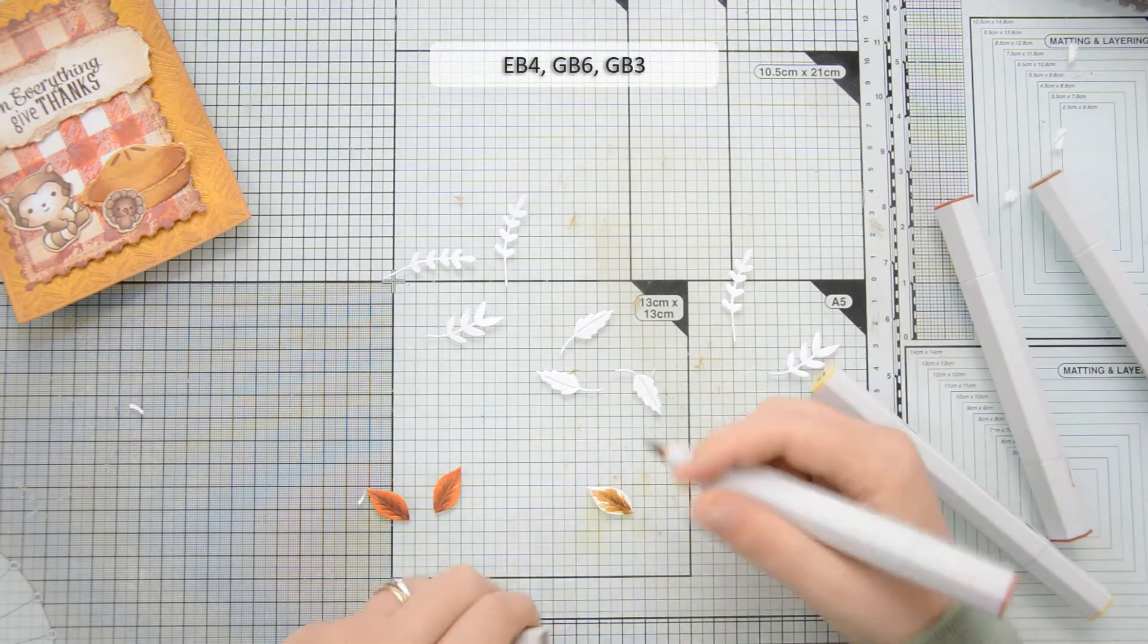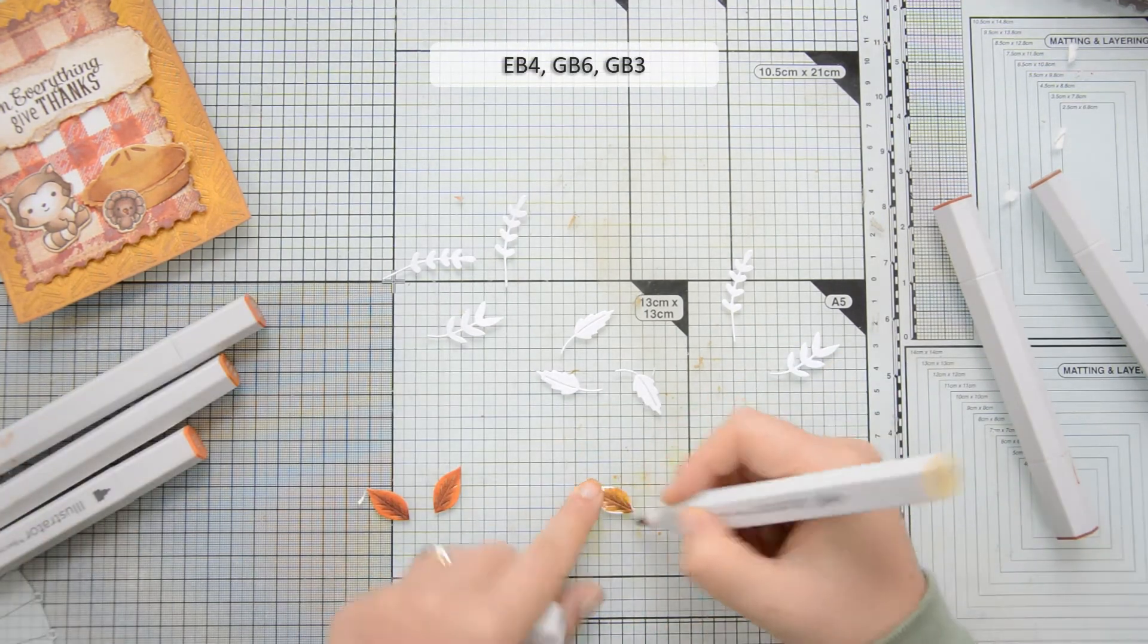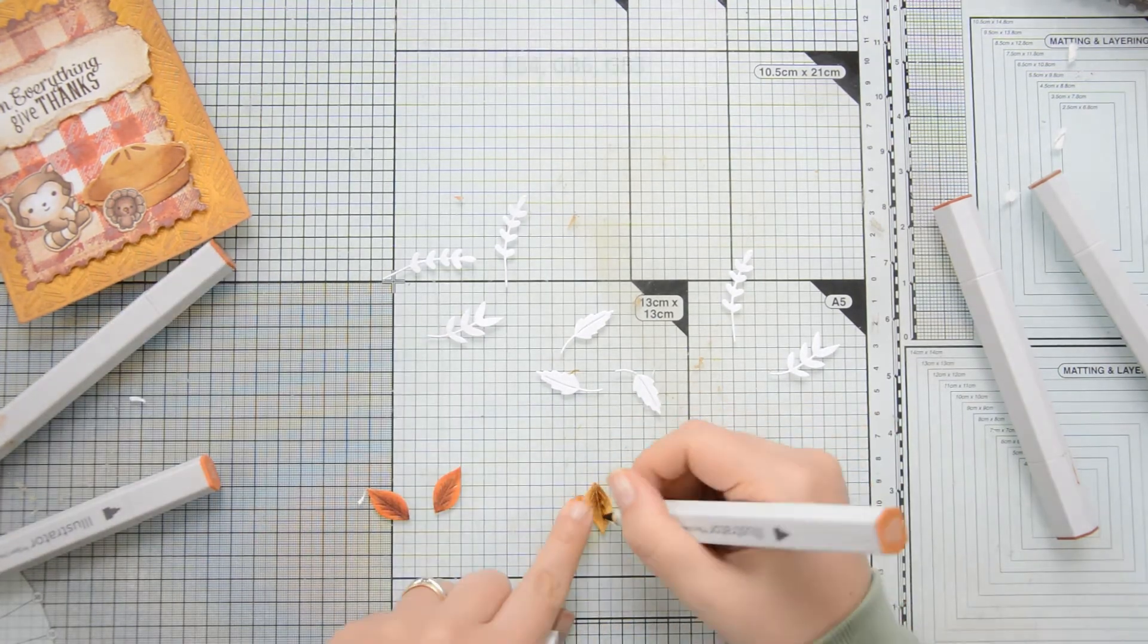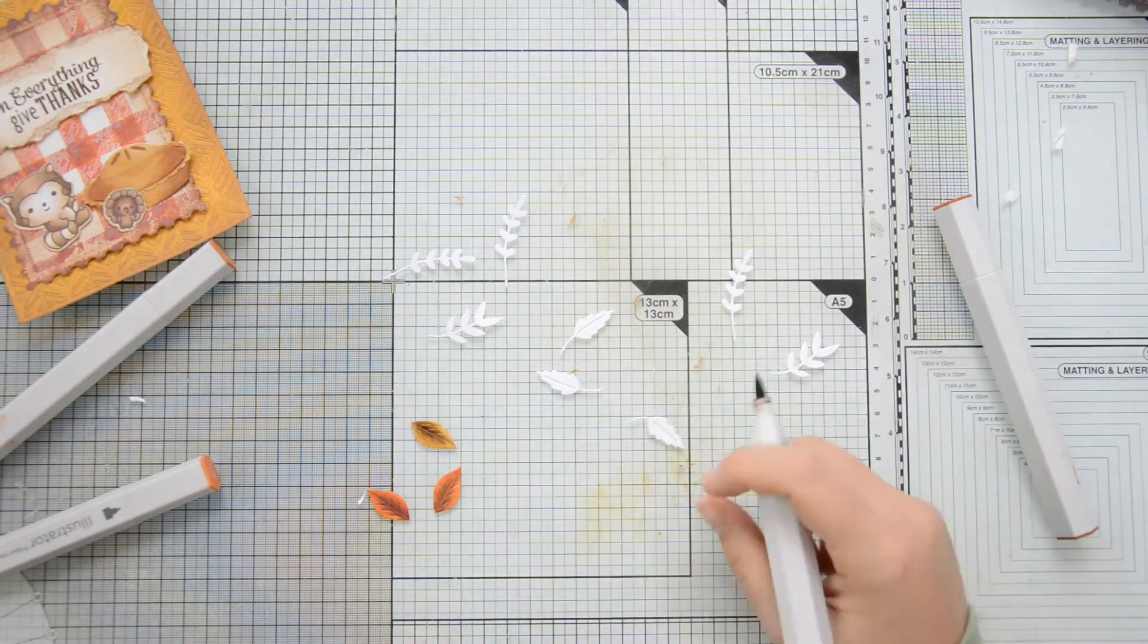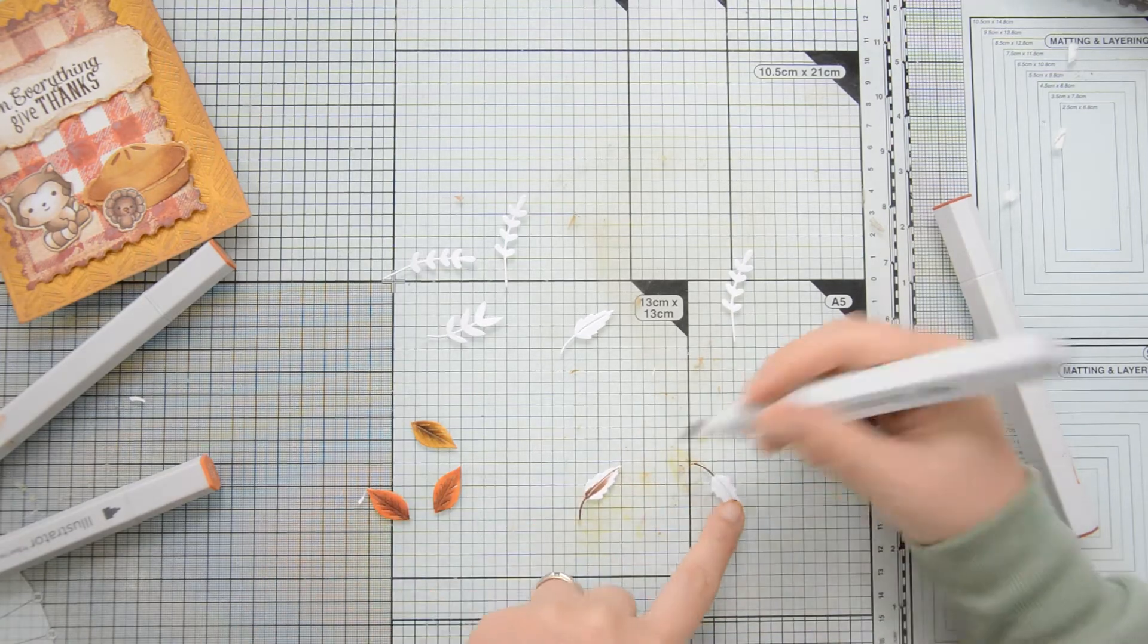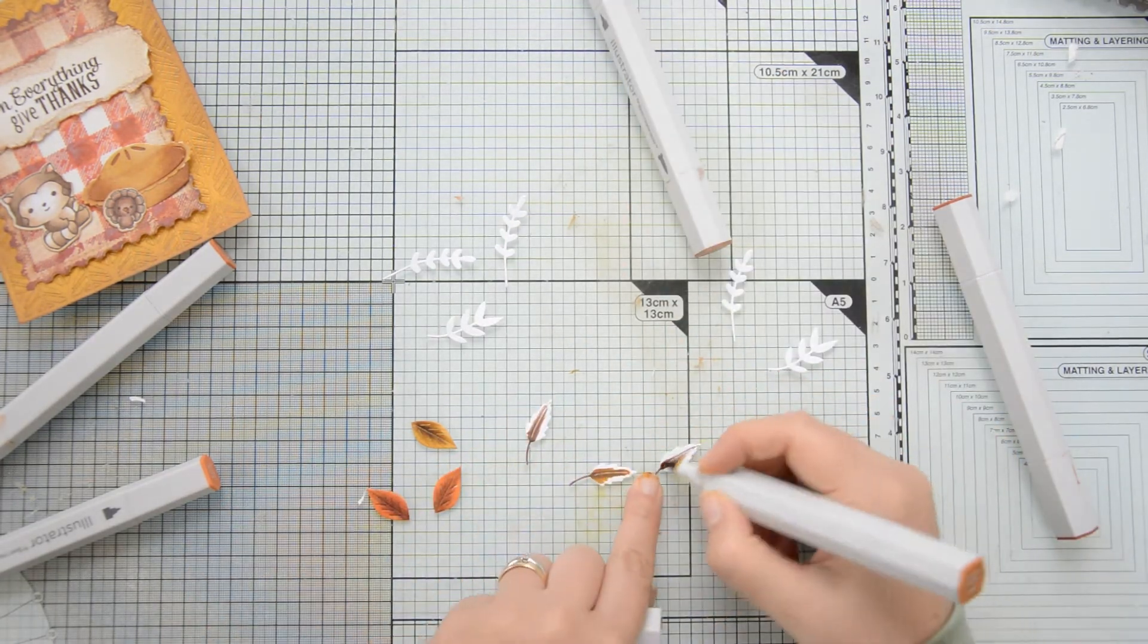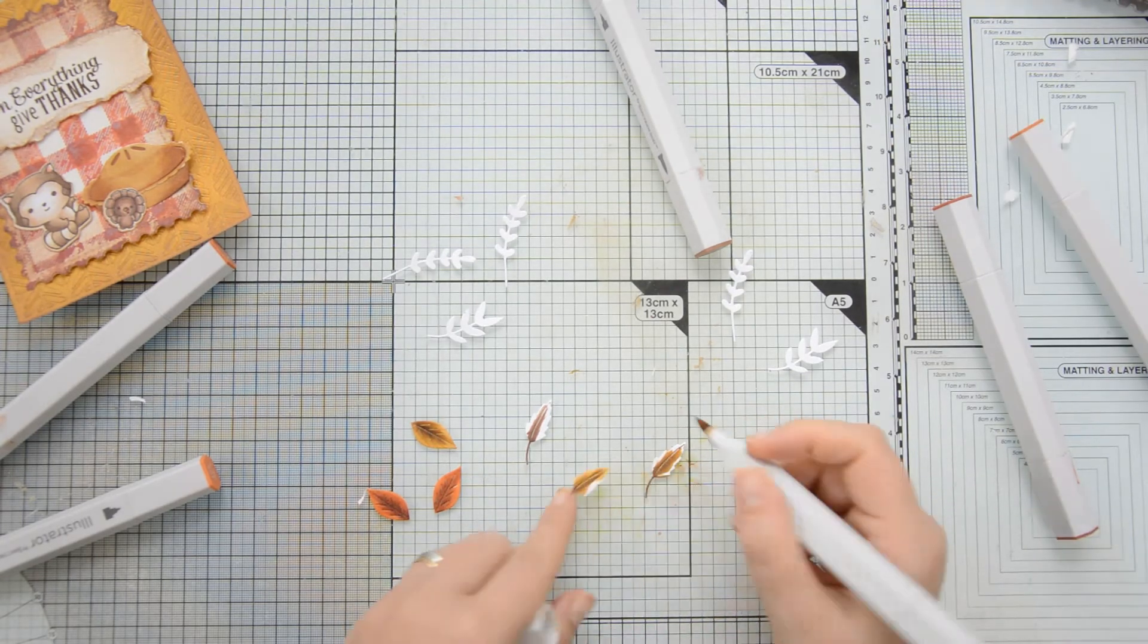The next elements that I created to decorate my card front are these leaves and for those I used the floral pocket tag die by Sugar Pea Designs. I die cut some Neenah Solar White 110 pounds cardstock and then I used my illustrator markers to color them as well.